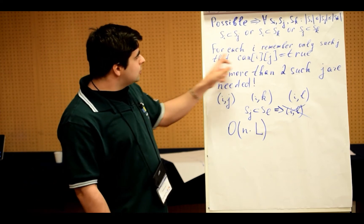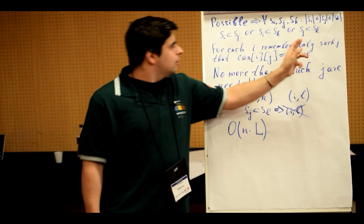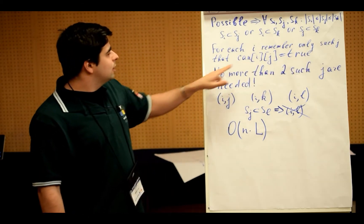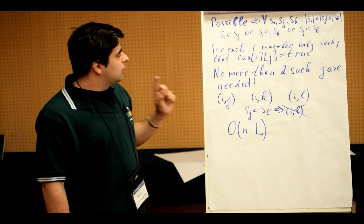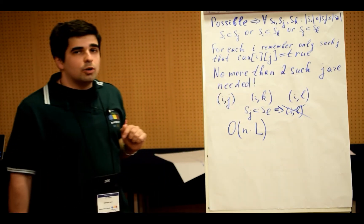So, for each I, we need only to remember only those J where (I, J) is true, and we will see that only two such J are needed, no more.